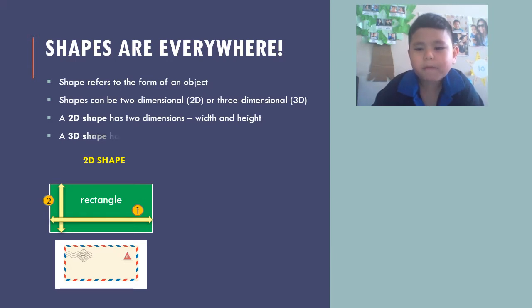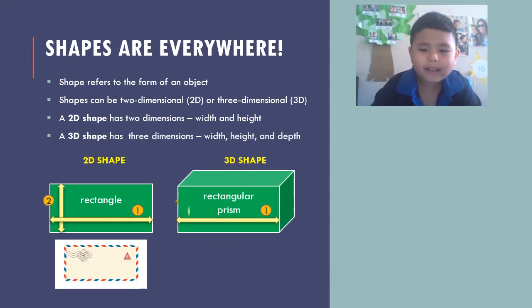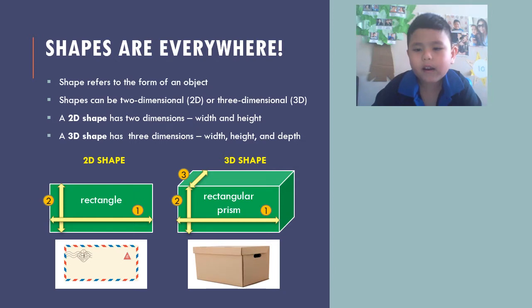A 3D shape has three dimensions. It has width, height, and depth. A rectangular prism is a 3D shape. A box is an example of a rectangular prism.